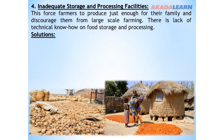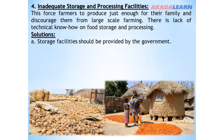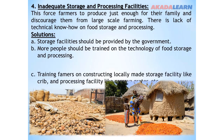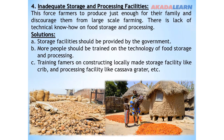Solutions: Storage facilities should be provided by the government. More people should be trained on the technology of food storage and processing. Training farmers on constructing locally-made storage facilities like cribs, and processing facilities like cassava graters, should be encouraged.